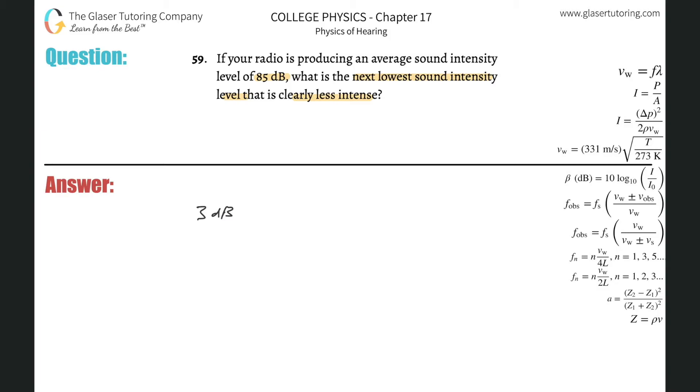If we're talking about something being less intense, we're going to take 85 minus 3 from it, obviously. This just becomes 82 decibels, and that's how you would go about that. Just memorize that.